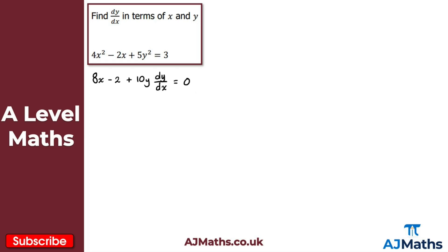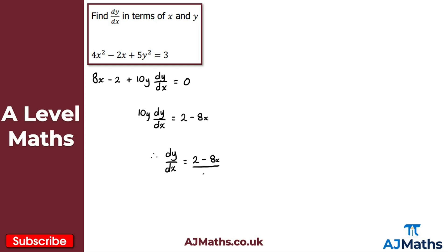Now we make dy by dx the subject. Moving 8x minus 2 across to the other side gives 10y dy by dx equals 2 minus 8x. Dividing both sides by 10y, dy by dx equals 2 minus 8x all divided by 10y. That gives us the solution to question 1.